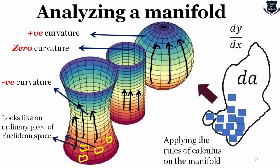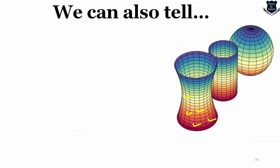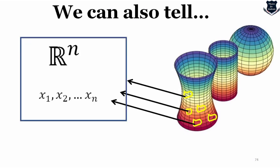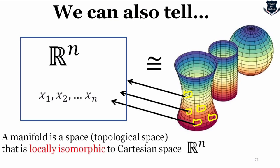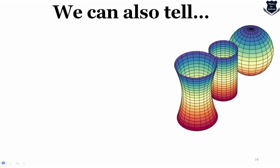Whatever the curvature — positive, negative, or zero — when we plot it on flat spacetime and use calculus, we can apply the rules of calculus on a manifold. That is why manifolds are useful. These local Euclidean patches can be mapped into ℝⁿ and are isomorphic to each other. A manifold is a space that is topologically, or I would say locally, isomorphic to a Cartesian space ℝⁿ. That gives a basic understanding of what a manifold is and how it looks like.